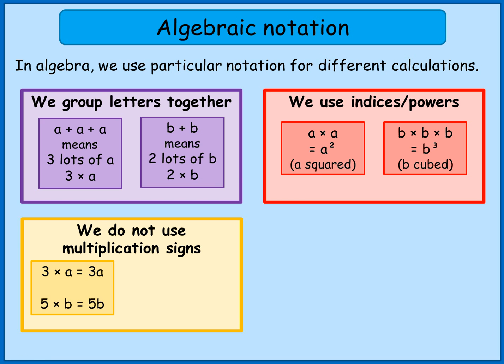Similarly, five times b should be written as 5b without the multiplication sign. And that's exactly the same when I've got a pair of letters. So if I had a times b, that should really be written as ab without the multiplication sign.